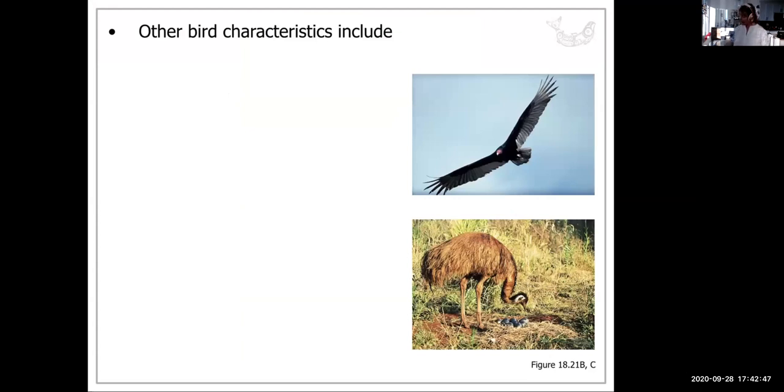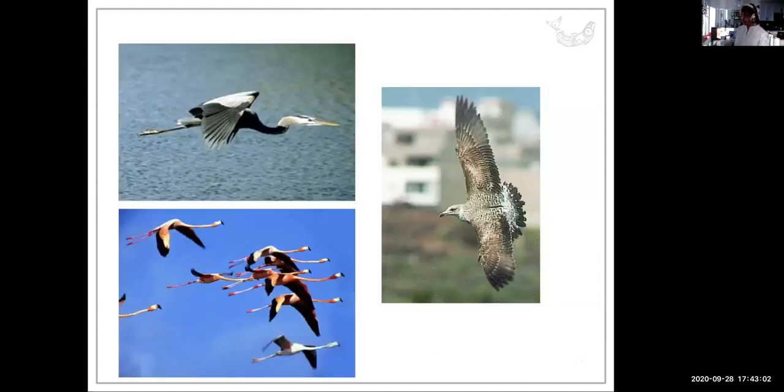But birds are characterized by wings, of course. Feathers. And they are also endotherms. They have hollow bones for flight. And they have a keratinized beak. And there's many versions of birds.